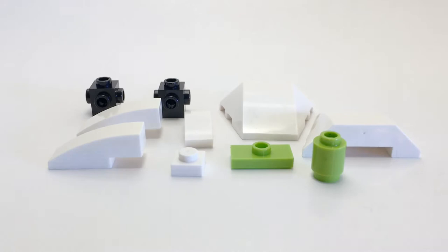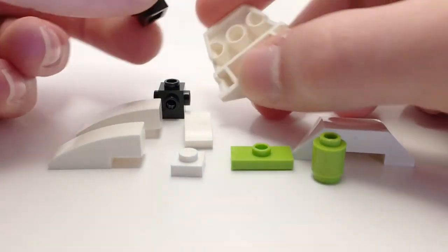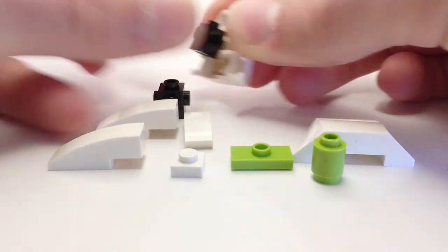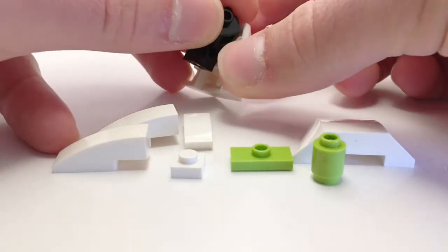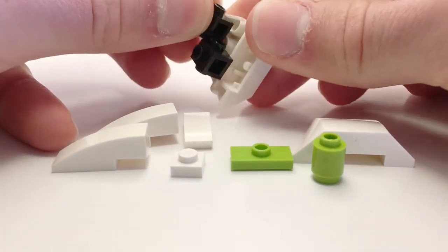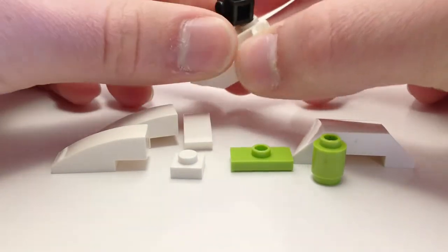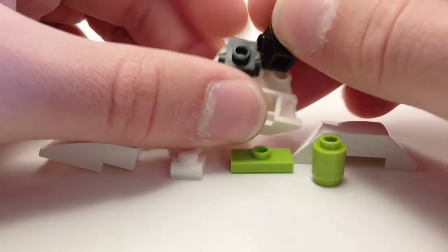Alright so here is our soap pump. Building this up, the main section of it is built using these three long curved pieces and then we have a couple one by ones with studs on all four sides attached in there.